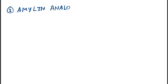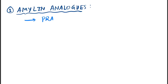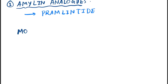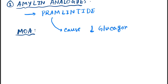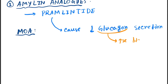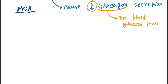The next category of drug, number three, is amylin analogs. The drug is pramlintide. The mechanism of action is that it causes a decrease in glucagon secretion. As you know, glucagon increases blood glucose levels, so as a result of decreased glucagon, blood glucose levels will also decrease.